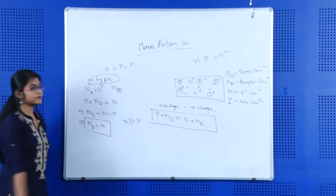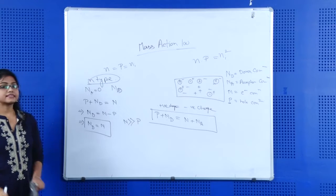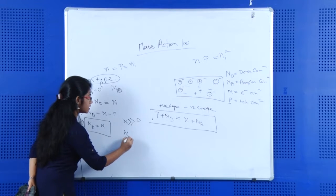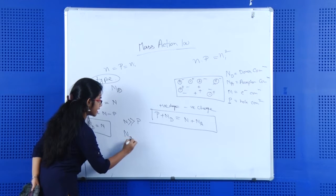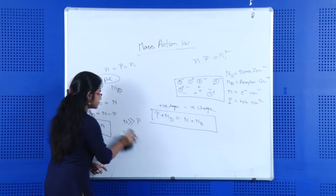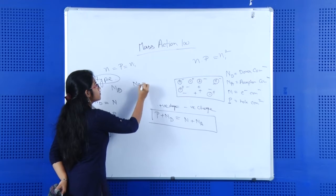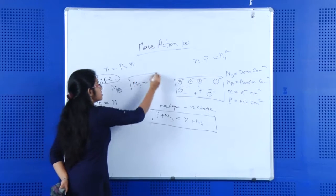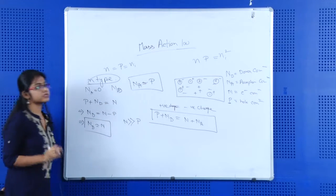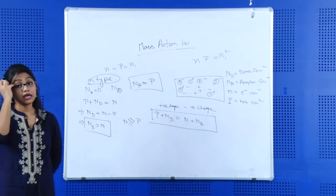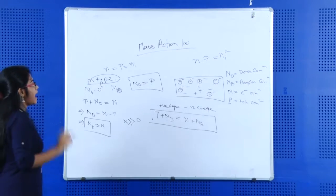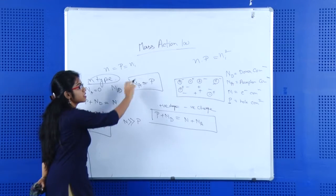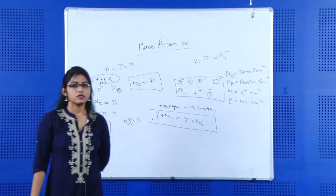In the same way, for p-type material we can find that the acceptor concentration NA equals P, the hole concentration. So the donor concentration is equivalent to the electron concentration, and the acceptor concentration is equivalent to the hole concentration. Thank you.